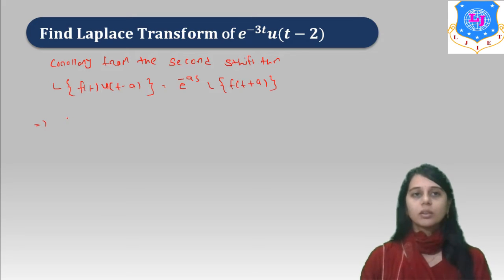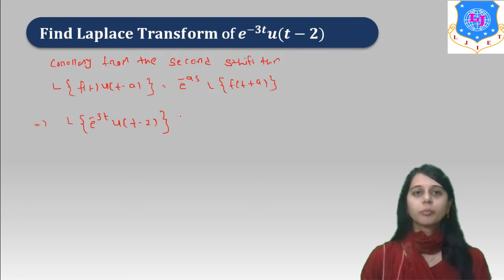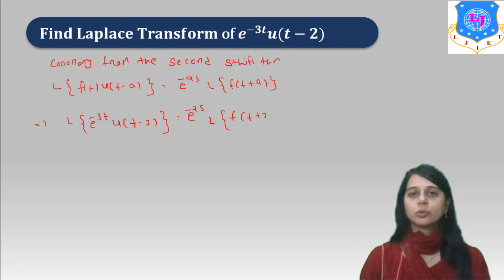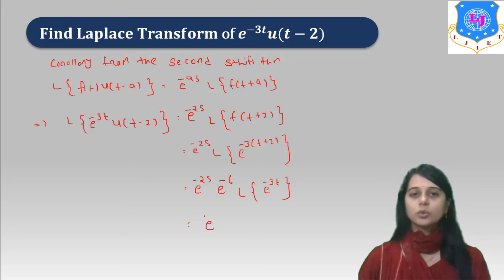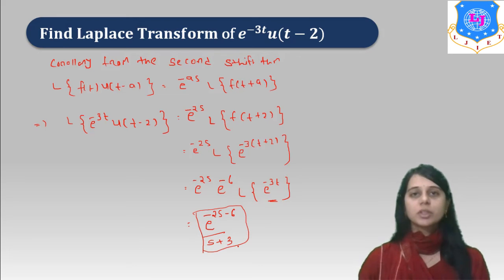For this example, Laplace of e raised to minus 3t times u(t minus 2). We apply the corollary: e raised to minus 2s times Laplace of f(t plus 2). The function is e raised to minus 3t, so replacing t with t plus 2 gives e raised to minus 3(t plus 2). Taking e raised to minus 6 as a constant, we apply Laplace of e raised to minus 3t. The answer is e raised to minus 2s minus 6, over s plus 3, because the Laplace transform of e raised to minus 3t is 1 over s plus 3.